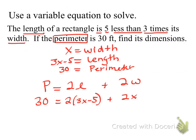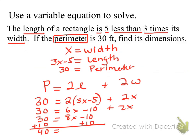Next step. Distribute. We're going to distribute. 30 equals 6X minus 10. You add like terms. 30 equals 8X minus 10. Then you're going to add 10 to each side. And we get 40 equals 8X. I'm dividing by 8. And X is equal to 5.